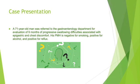The case is a 71-year-old man who was referred to the GI department for evaluation of nine months of progressive swallowing difficulties associated with epigastric and chest discomfort. His past medical history is negative for smoking, positive for alcohol consumption, and positive for reflux.